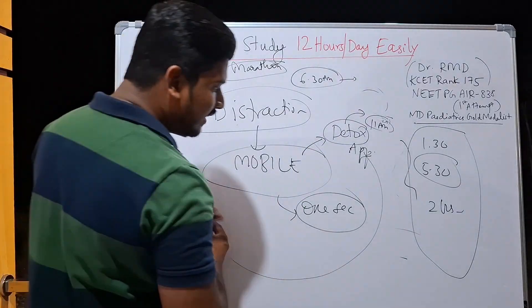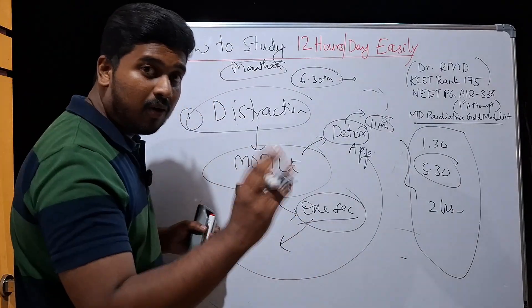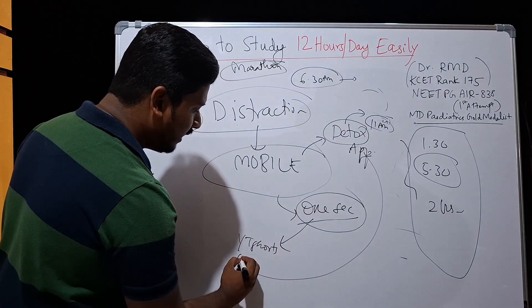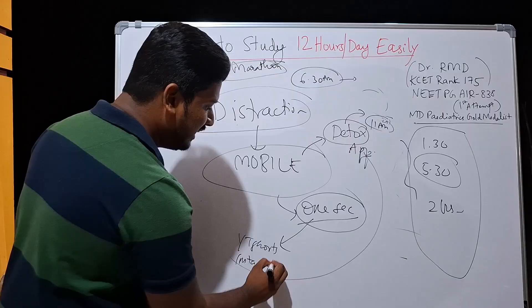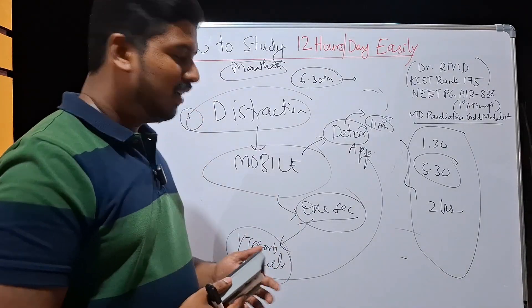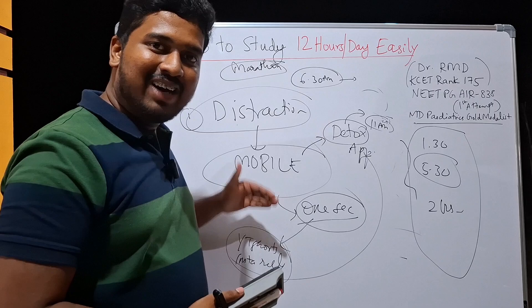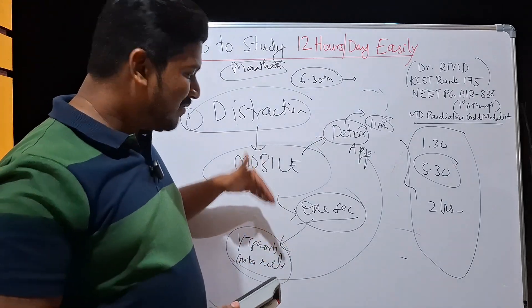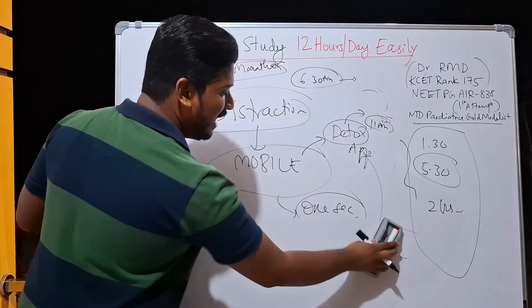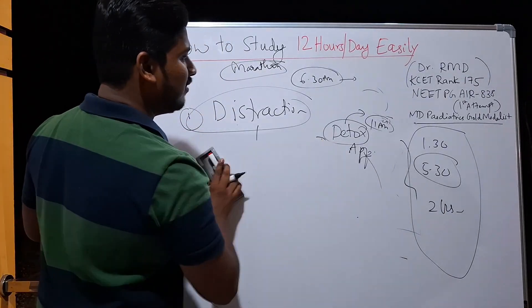Similarly, OneSec app selectively blocks your YouTube Shorts and Instagram Reels. And I think these two things are the ones which keep you in loop continuously. If these two are out of the question, then it becomes very easy to focus. You will realize it once you have installed this. I am not promoting any app, but this is what I used.